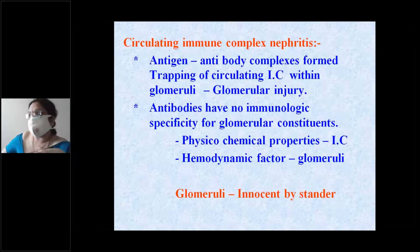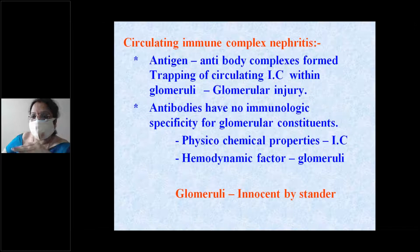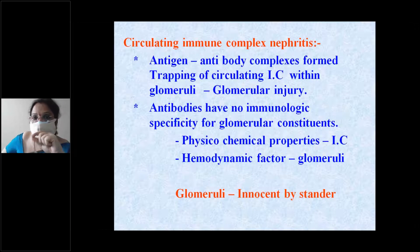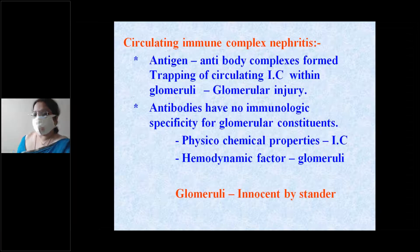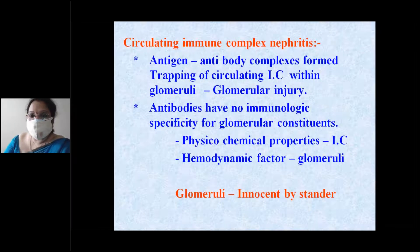What is most important to understand is that antigens do not have any specificity for the glomeruli or its constituents. Instead, the physicochemical properties of the basement membrane and the immune complexes, as well as hemodynamic factors, play a major role in the deposition of circulating immune complexes on the glomeruli.